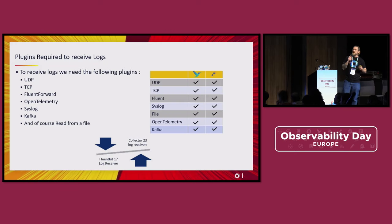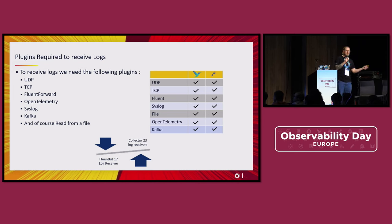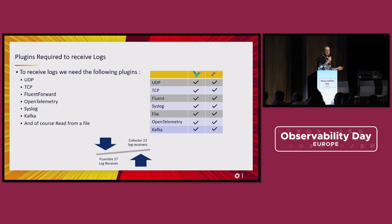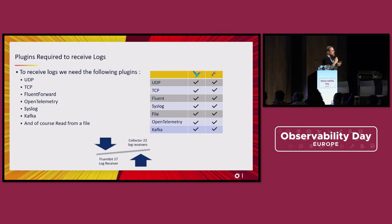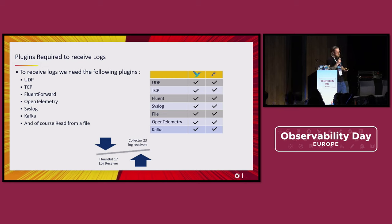For logging, what do you expect from an agent when collecting logs? First, standard protocols need to be supported: UDP, TCP, Fluent protocol, OpenTelemetry, Syslog, Kafka — because you'll probably go through a Kafka queue — and of course reading from a log file. The good news is both agents have the same plugins. The Collector has obviously more plugins, but for the main use cases those plugins cover most of our needs. Pretty much equal in terms of plugin coverage.